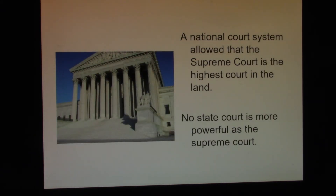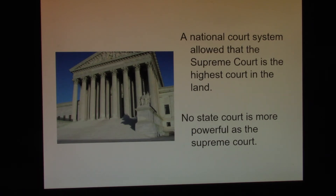The final branch of government is the court system. The national court is called the Supreme Court, and it is considered the most powerful court in the land. No state decision is more powerful than the Supreme Court. So, let's say that a person is convicted of a horrendous crime and sentenced to death, but the Supreme Court can rule that he's not supposed to be executed. If there's a conflict between the state and the federal, it's the federal that prevails.